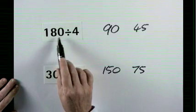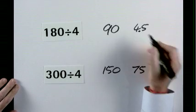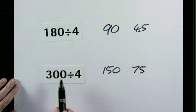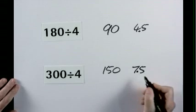If it had been 18 divide by 4, the answer would be 4.5. If it had been 30 divide by 4, the answer would be 7.5.